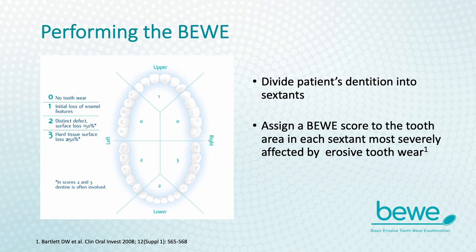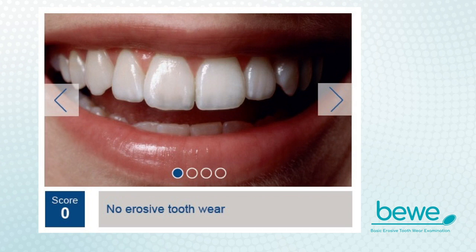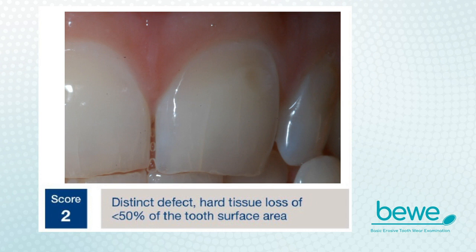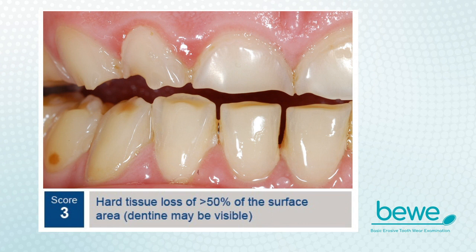I am now going to guide you on how to use the BWI. Score 0 is used for no wear. Score 1: here you can see early changes to the enamel surface with loss of mamelons and flattening of the enamel, as you can see on these central incisors. Score 2: as you can see on the upper left central incisor, there is erosive tooth wear near to the cervical margin, but it is less than 50% of the surface. This image shows erosive tooth wear that has progressed to involve more than 50%, with dentine showing and loss of clinical crown height.